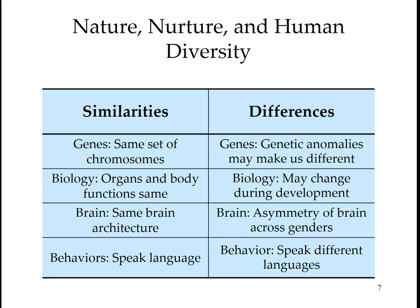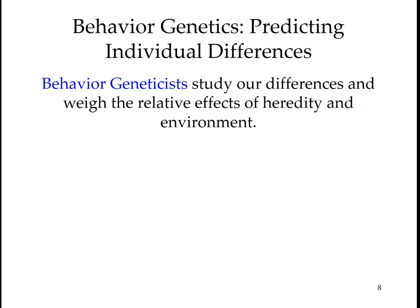Members of the human family differ in personality, interests, culture, and family background. At the same time, our shared brain architecture predisposes us to sense the world, develop language, and experience hunger through the same mechanisms. Humans everywhere affiliate, conform, and reciprocate favors, punish offenses, and grieve a child's death. Behavior geneticists study our differences and the relative effects of heredity and environment.